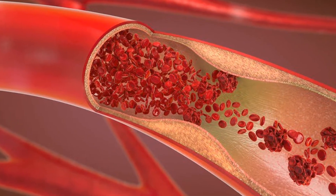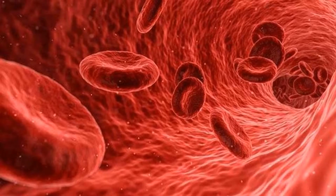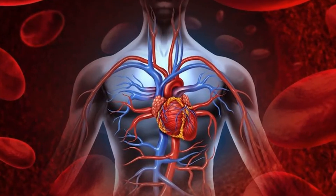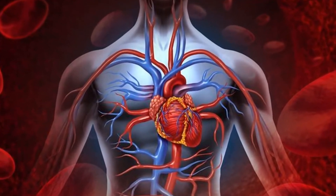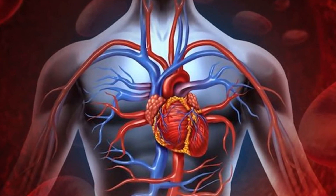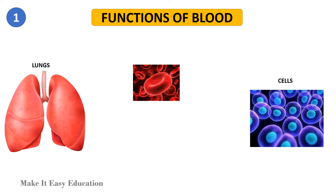Blood is a substance that flows inside the human body through muscular tubes called blood vessels. Blood is pumped by the heart to different parts of the body, and is responsible for the transportation of nutrients, water, oxygen, and carbon dioxide within our body. The red blood cells present in the blood take oxygen from the lungs to all the cells in the body.